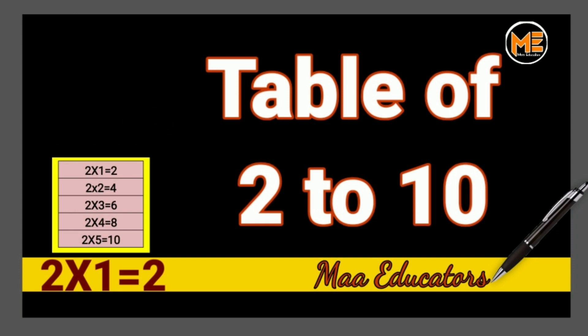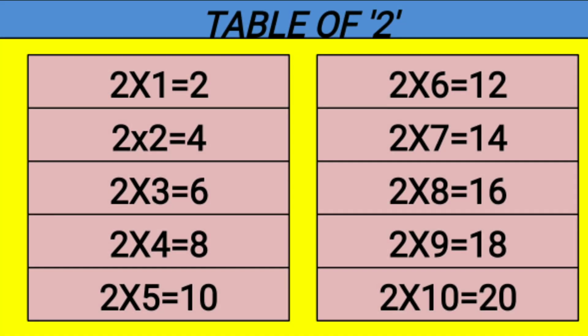Table of 2. 2 1s are 2, 2 2s are 4, 2 3s are 6, 2 4s are 8, 2 5s are 10.